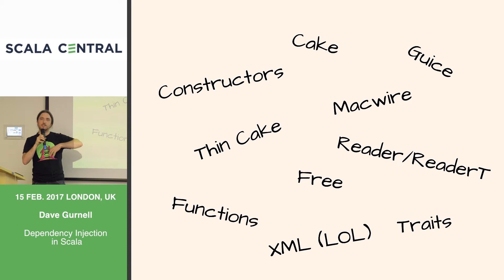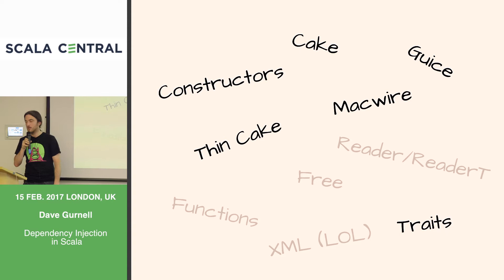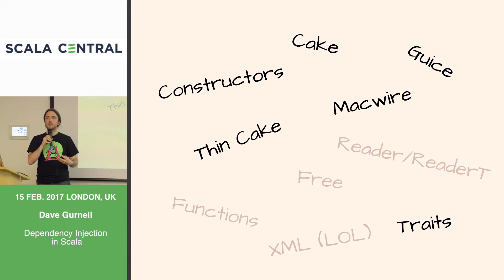I'm not going to talk about all of these because I did what I always do — wrote out a talk and realised it was an hour long. So I'm going to drop the interesting ones and talk about the mundane ones. You've already seen stuff about free — Greg talked about that earlier. Implicits and type classes are another great way of doing DI. We're going to talk about some standard techniques, and hopefully I'll show you that a lot of these bear some striking similarities.